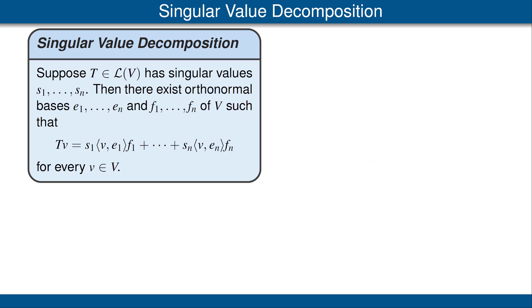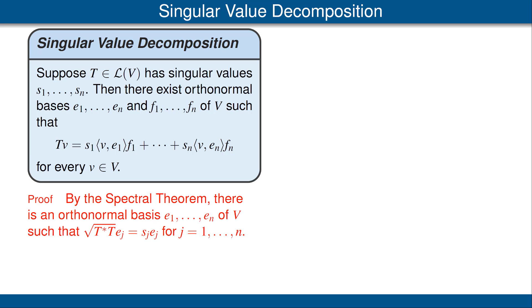Now let's present the proof of the singular value decomposition. Amazingly, we can fit the entire proof on just one slide. We will be using the spectral theorem applied to the square root of T*T. Recall that the square root of T*T is a positive operator — in particular, it is self-adjoint. Thus, we can apply the spectral theorem regardless of whether our scalar field is real or complex. The spectral theorem tells us that there is an orthonormal basis e1 up to en of V consisting of eigenvectors for the square root of T*T, and the associated eigenvalues are precisely the singular values.